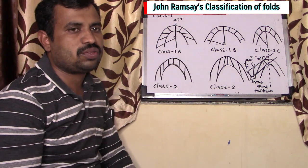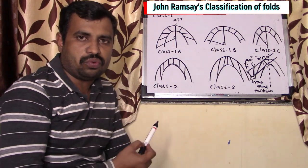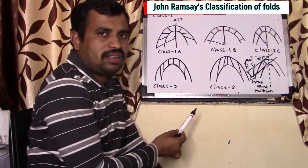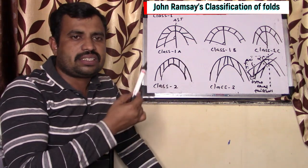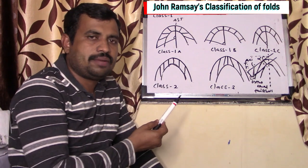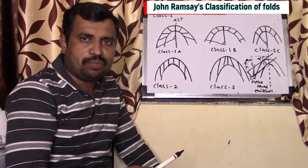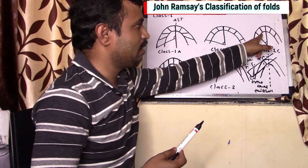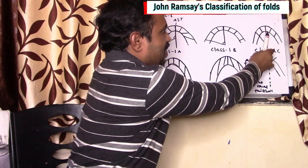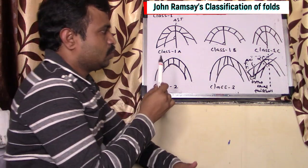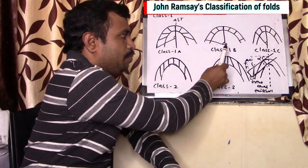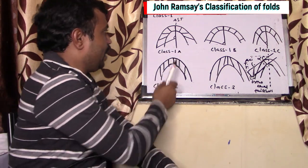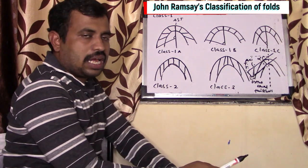The second subtype is class 1B. This type of fold is also called parallel folds. In this case, the orthogonal thickness is constant — whether you measure thickness at the hinge or at the limbs, along the dip isogon the thickness is constant. Such types of folds are called parallel folds, and according to Ramsey, they are called class 1B. In class 1C, the hinges are thick compared to the limbs. In all three — class 1A, 1B, and 1C — the common feature is that the isogons are convergent towards the center.